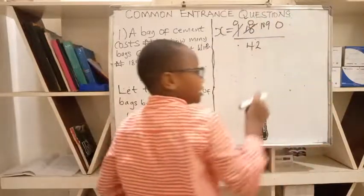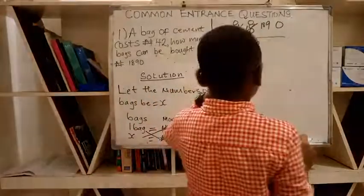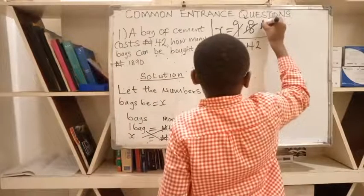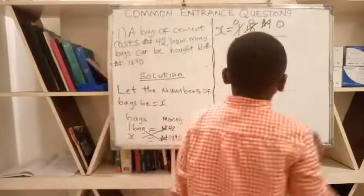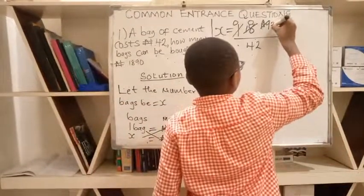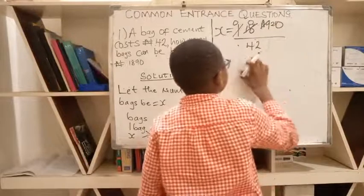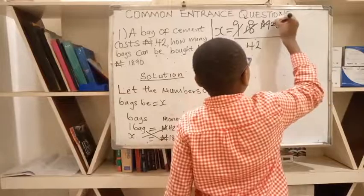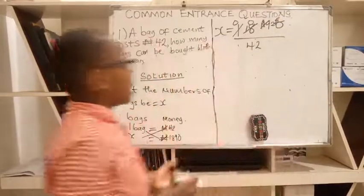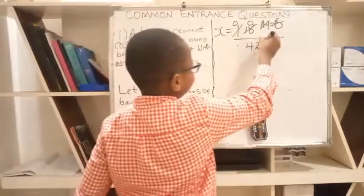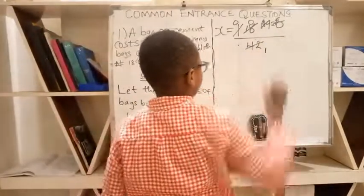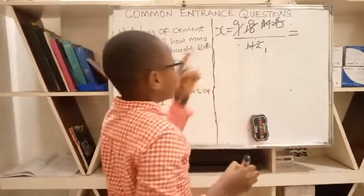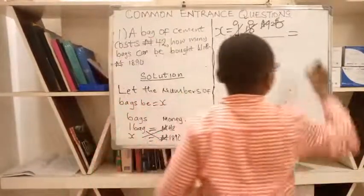18 and we attach it to 9. 189 divided by 42 will be 4 with a remainder of 21. 42 into 210 will be 5 and there's no remainder. So you divide the denominator by 1 which will be 1. It's equal to 45 over 1 which is the same as 45.